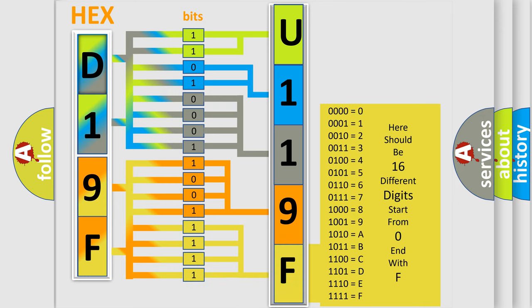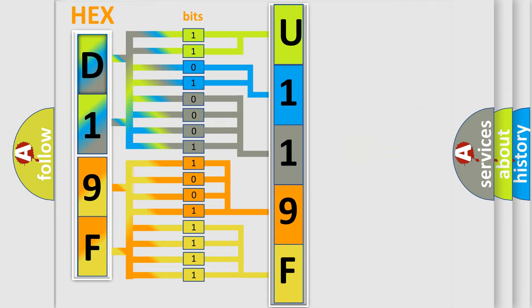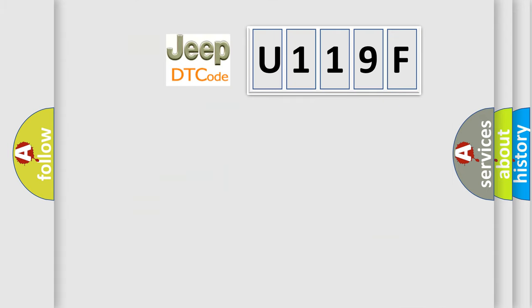We now know in what way the diagnostic tool translates the received information into a more comprehensible format. The number itself does not make sense if we cannot assign information about it to what it actually expresses. So, what does the diagnostic trouble code U119F interpret specifically for Jeep car manufacturers?